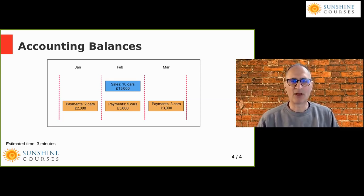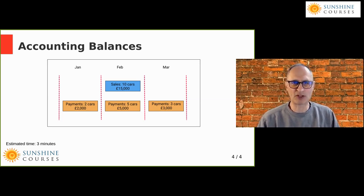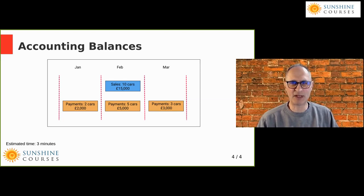When actually what happened was three of the cars we bought in February, but we didn't pay for them until March. So of our 10 cars sold in February: two came through in January, five came through in February, and three we paid for in March. This is a great example to illustrate what we mean by matching. Instinctively, if you sell 10 cars in February for £15,000, you need to account for costs of all 10 cars - that's £10,000 - so we should have profits of £5,000: sales of £15,000 less the cost of £10,000.